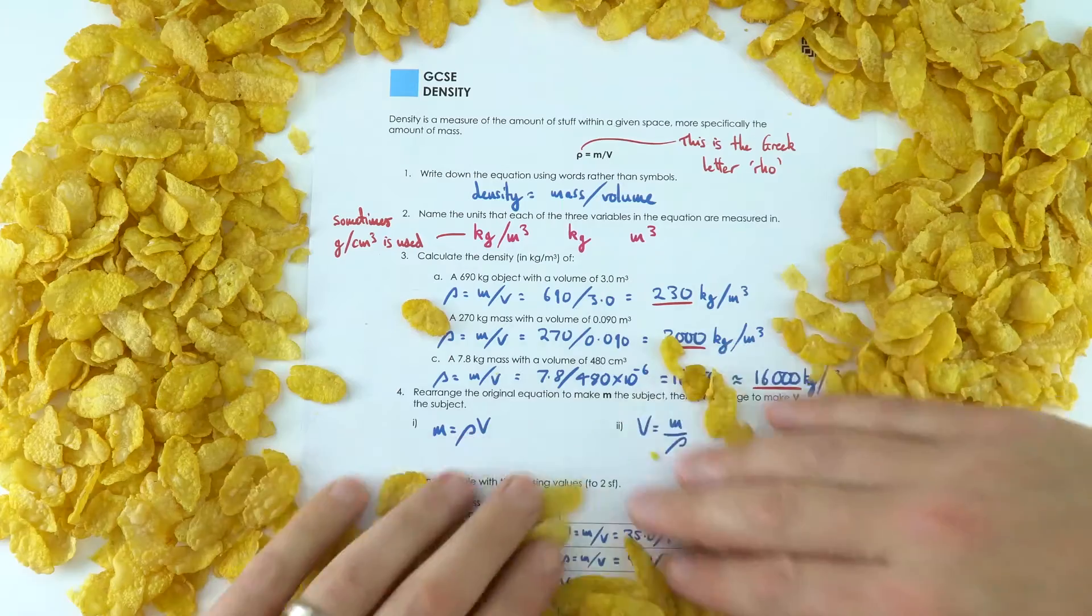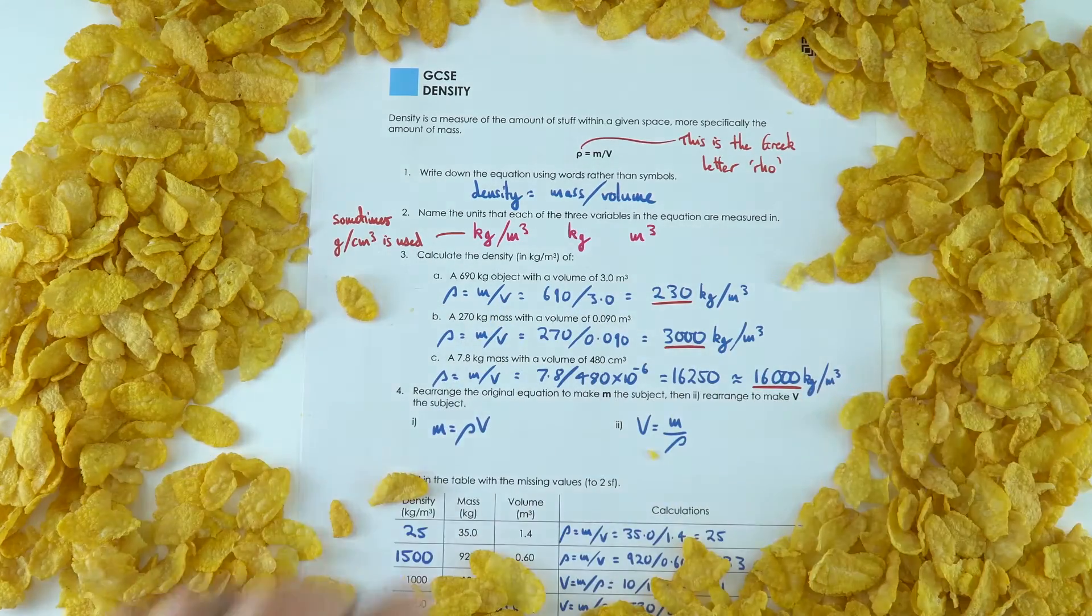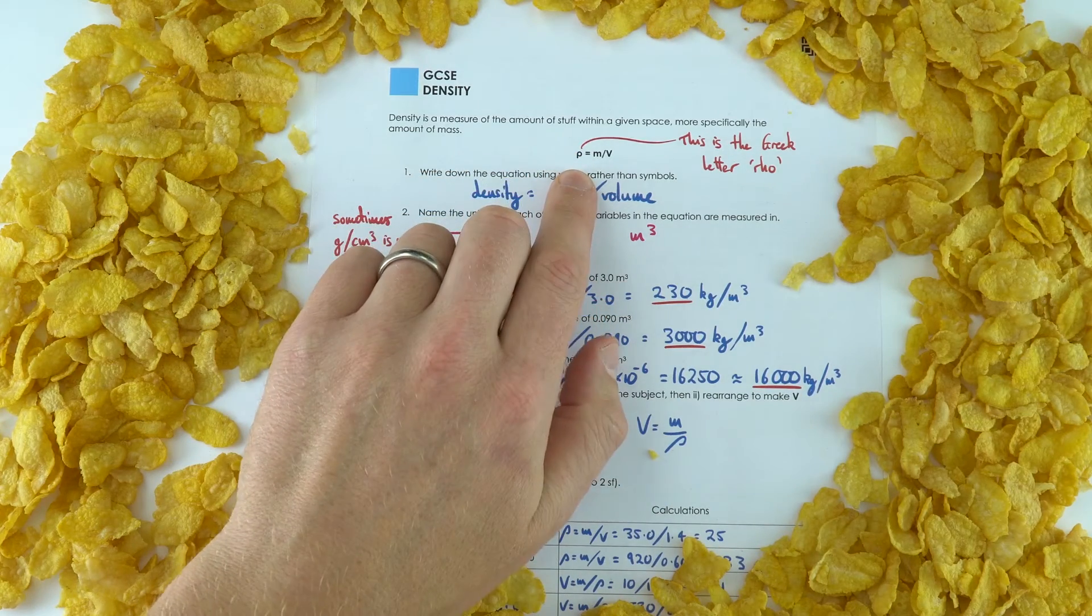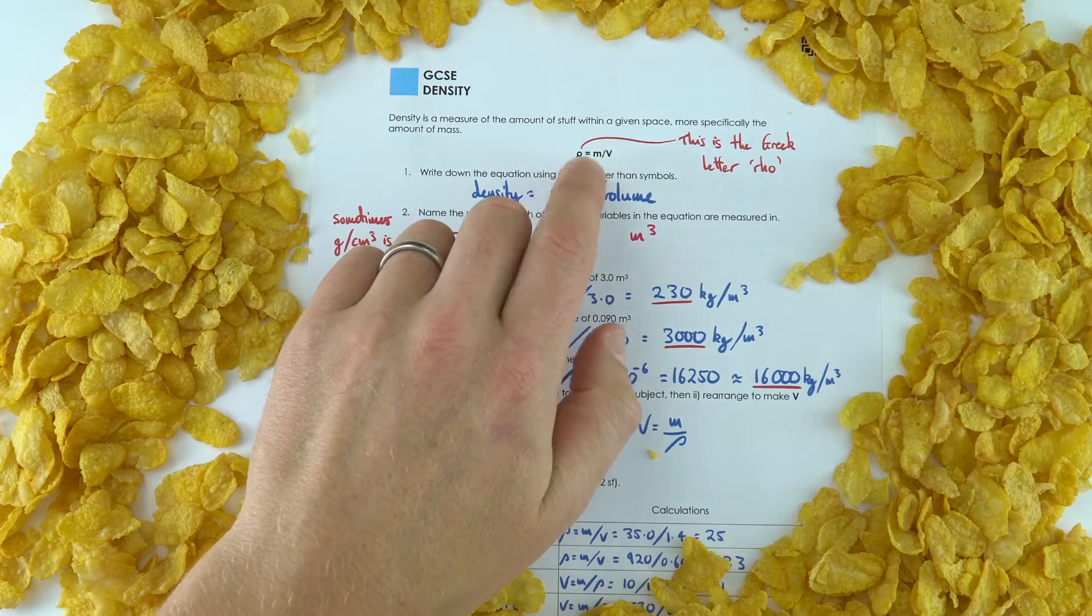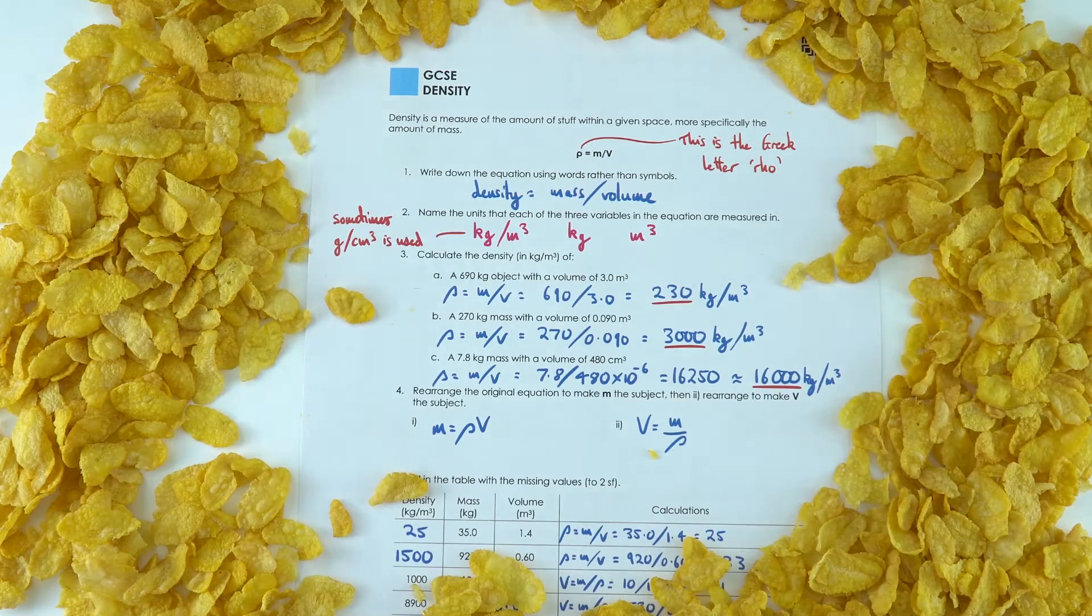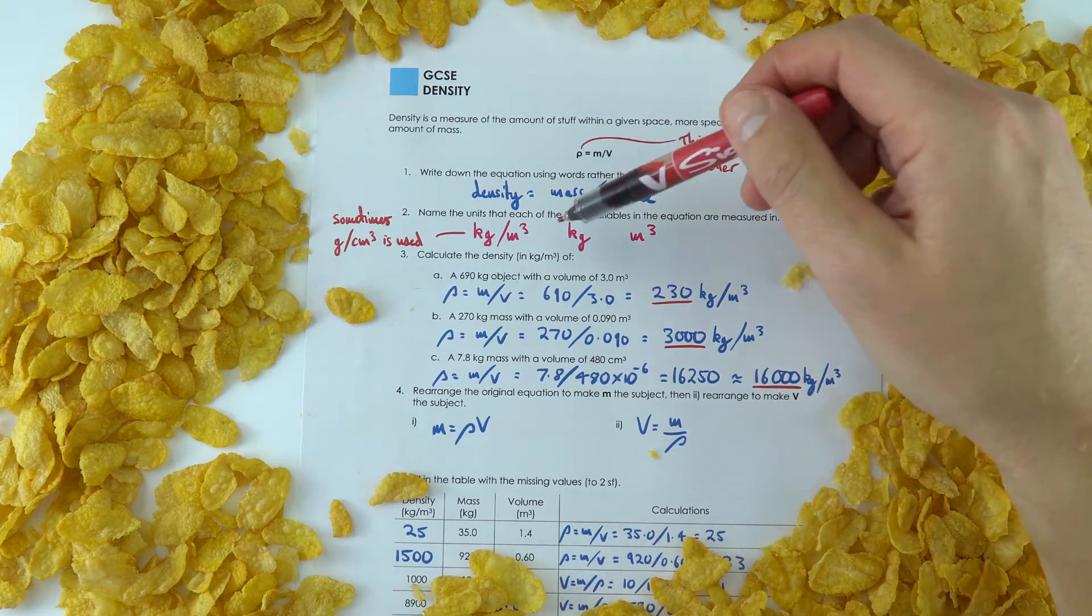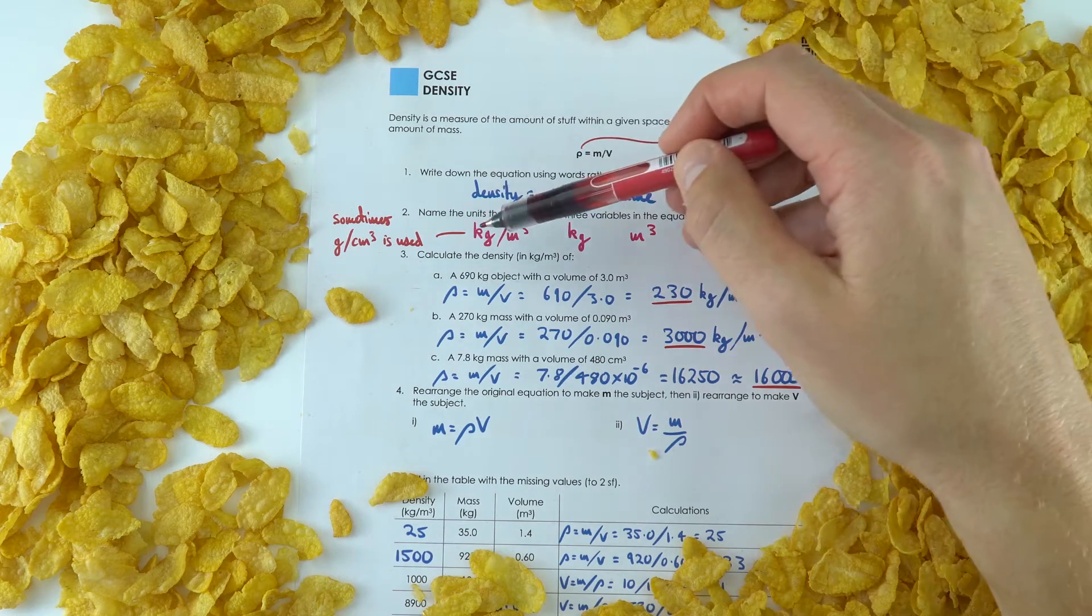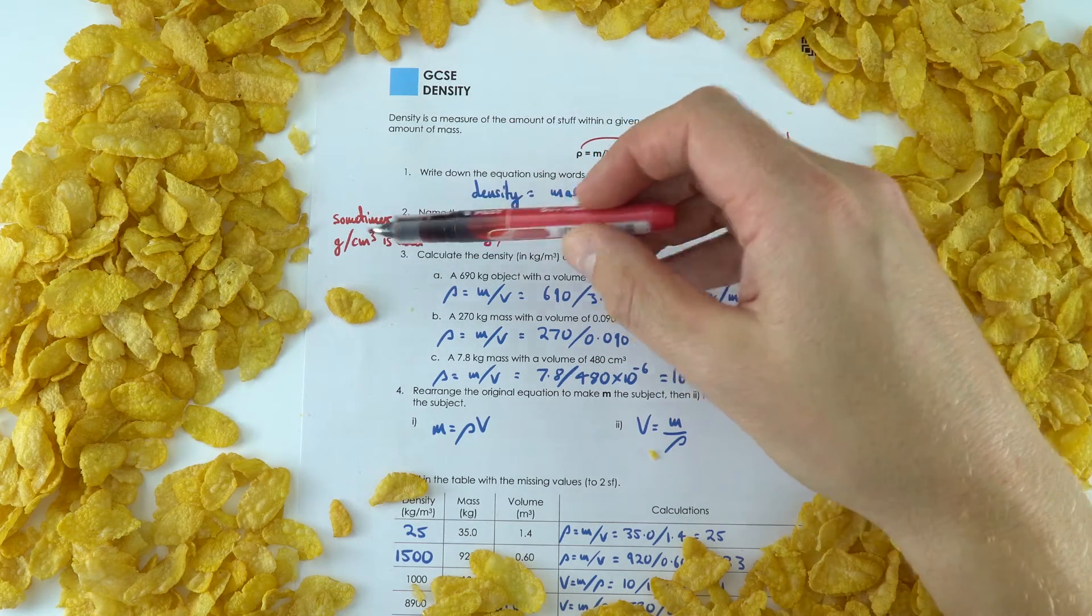Here we go. So this worksheet on density, we use the symbol rho, the Greek letter rho, to represent density. It's equal to the mass divided by volume. Now most of the time we use mass in kilograms and volume in cubic meters, but sometimes we also use grams per cubic centimeter.